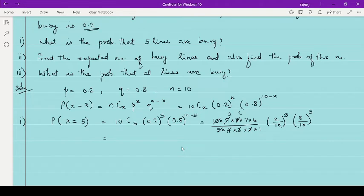So 10C5 you will get 252 here and then 2 by 10 raised to 5 and 8 by 10 raised to 5, or just 0.2 raised to 5 and 0.8 raised to 5. Calculating that you will get the answer. So I am leaving it for you.